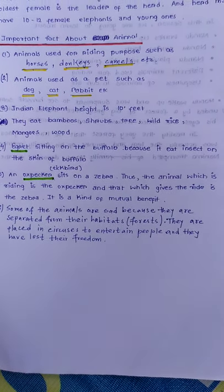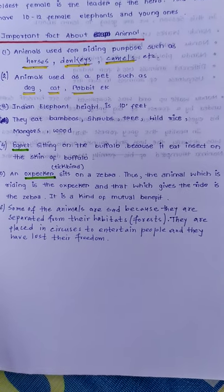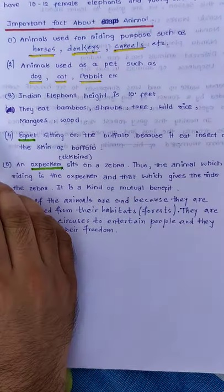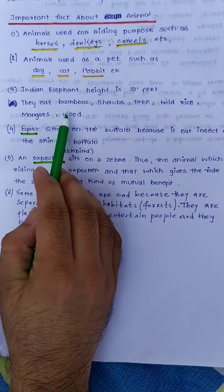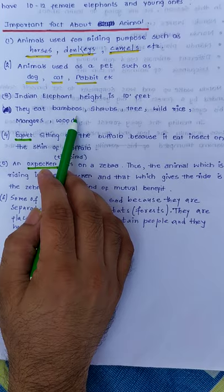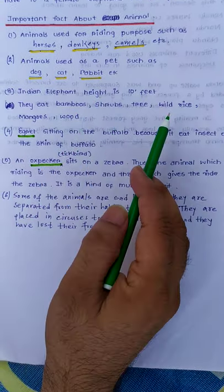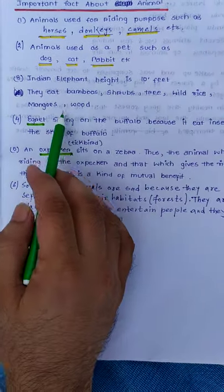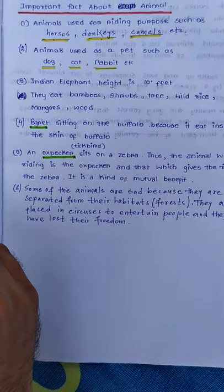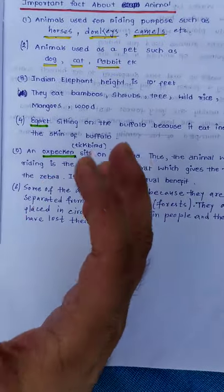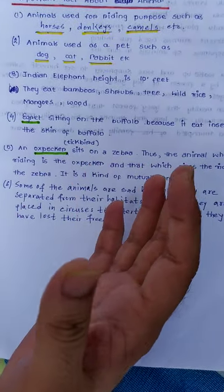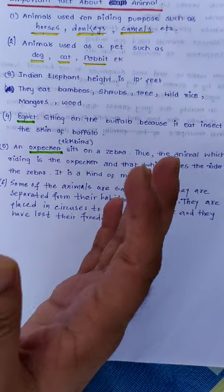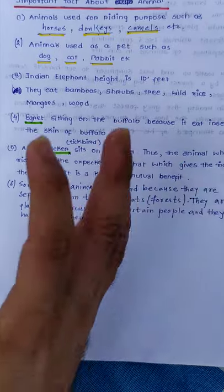The third important point: elephant height is 10 feet. Elephants eat bamboo, shrubs, trees, oil, rice, mangoes, and wood.